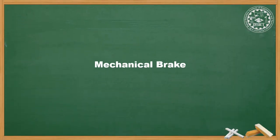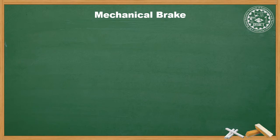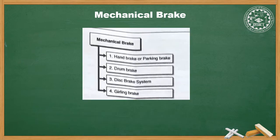Starting with mechanical brake — there are generally four types: first, hand brake or parking brake, used for parking the vehicle or stopping on a hill; second, drum brake; third, disc brake; and fourth, gear link brake. The drum brake and disc brake systems will be studied in depth.